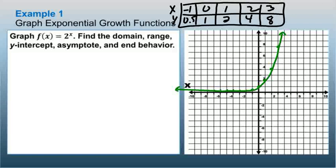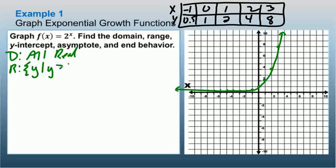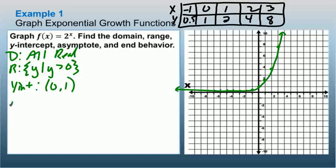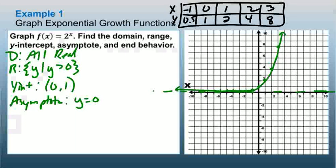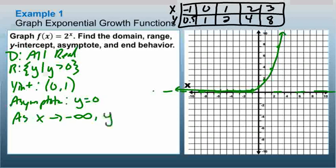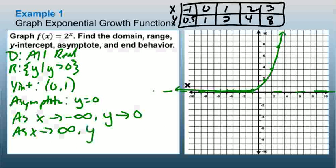The graph approaches but never reaches zero. The domain is all real numbers — I can put any number in for x. The range is y such that y is greater than 0; it can never equal 0. The y-intercept is at (0, 1). The asymptote is y = 0. For end behavior: as x approaches negative infinity, y approaches 0; and as x approaches positive infinity, y approaches positive infinity.